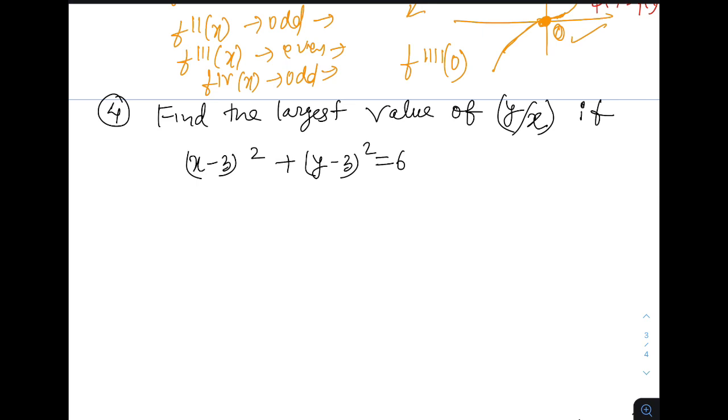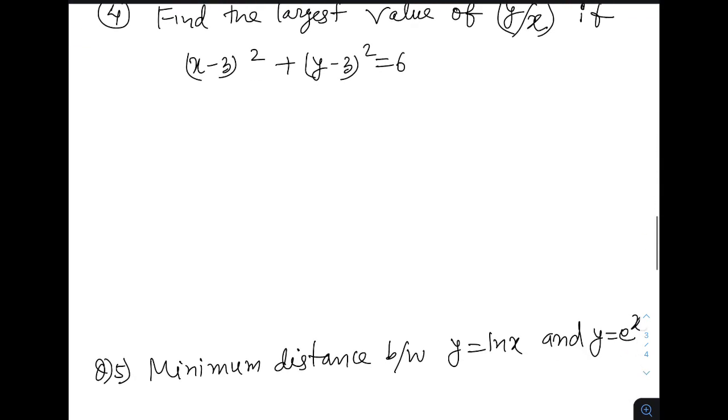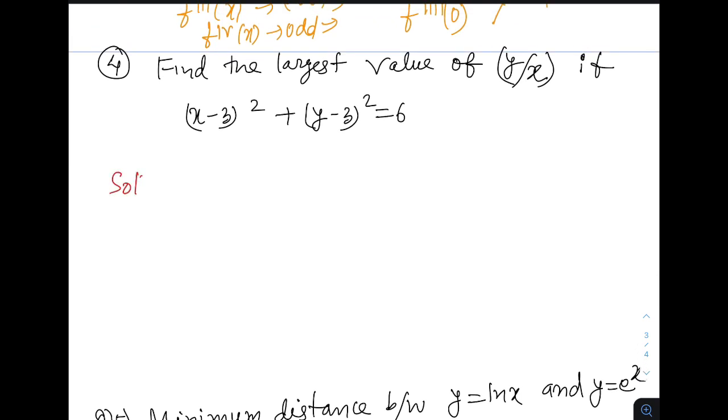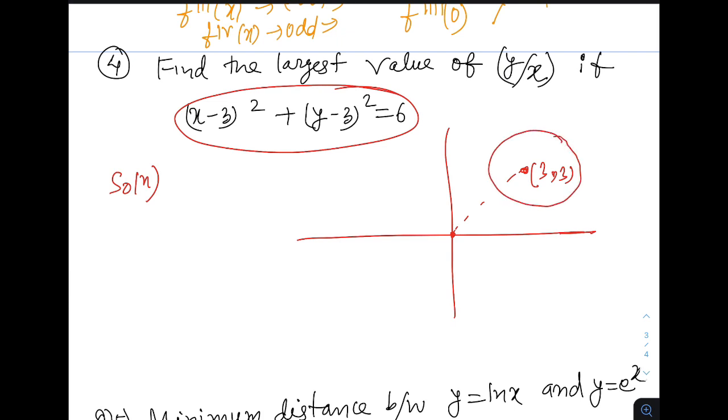Here we come with the next question. We have to find the largest value of y over x if x minus 3 whole square plus y minus 3 whole square equals 6. Clearly we can see this is a circle centered at 3 comma 3 and the radius is root 6. Now root 6 distance is clearly less than distance of origin from 3 comma 3. So it will be exactly in the first quadrant.